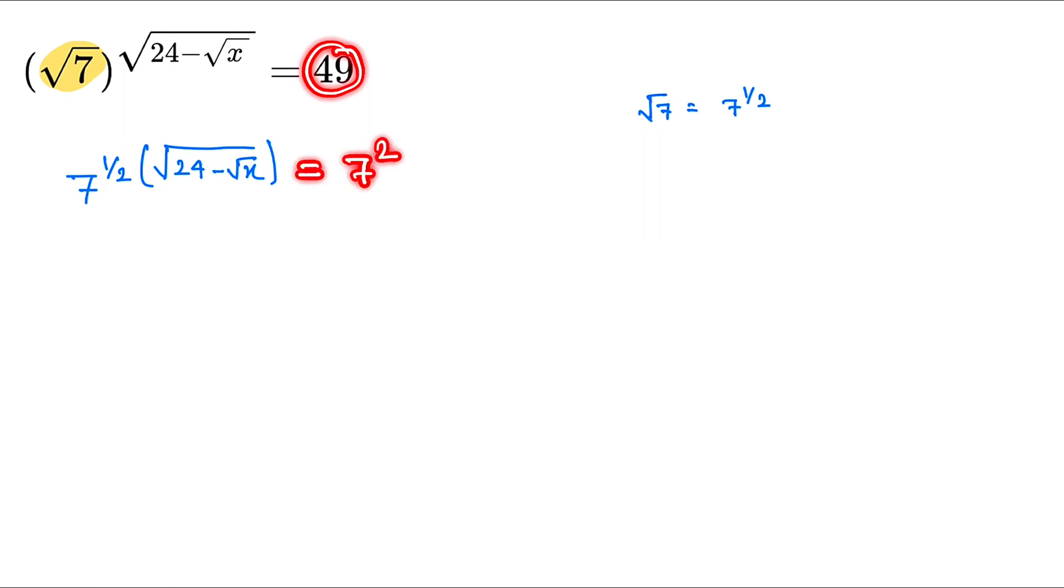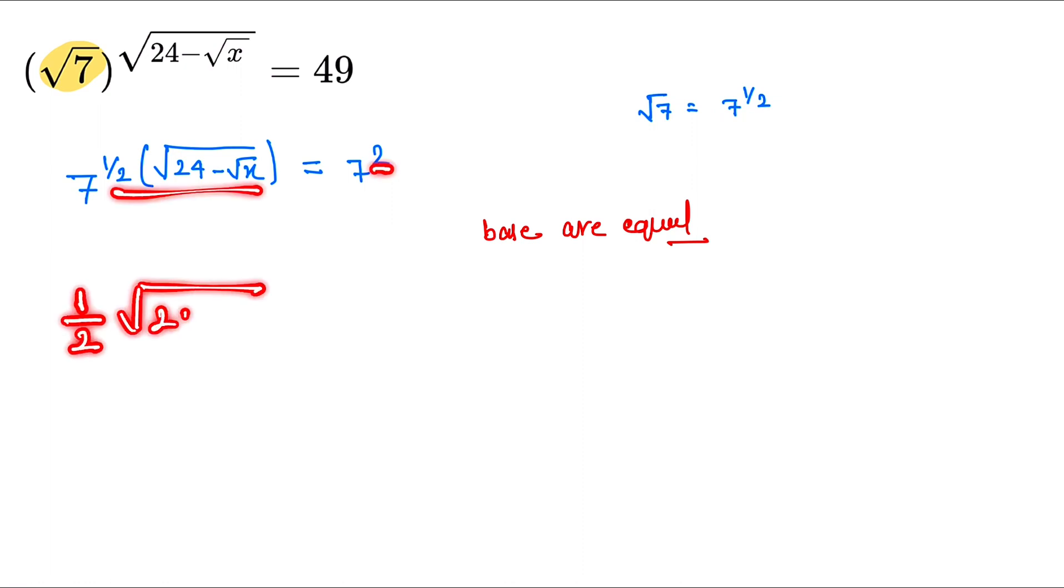So now here we look at the bases. Here is the power, and here this one is the base. Bases are equal: 7 and 7. So generally, we take the power. So that is (1/2) × √(24-√x) = 2. So now here, √(24-√x) = 2 × 2 = 4.